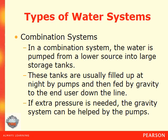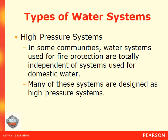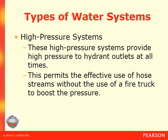If extra pressure is needed, the gravity system can be helped by the pumps. In some communities, water systems used for fire protection are totally independent systems from the domestic water supply. Many of these systems are designed as high pressure systems, providing high pressure at hydrant outlets at all times, permitting effective use of hose streams without a fire truck to boost the pressure. It's important to know that these systems are totally separate from the drinking water — a lot of times these systems also use non-potable water because their primary use is for firefighting.